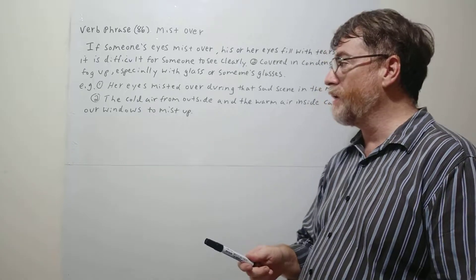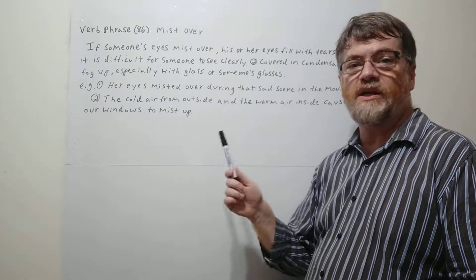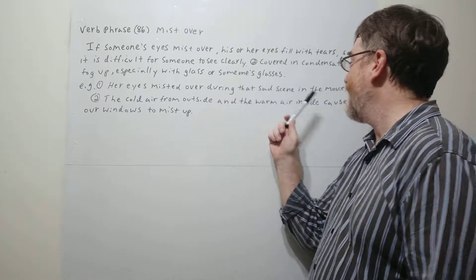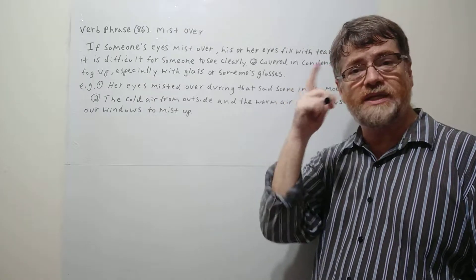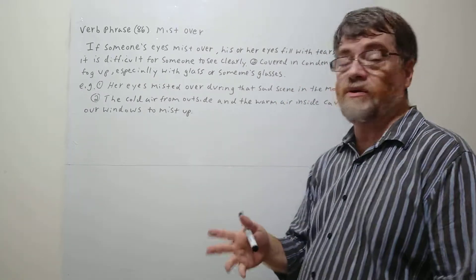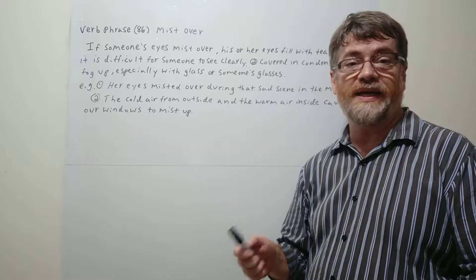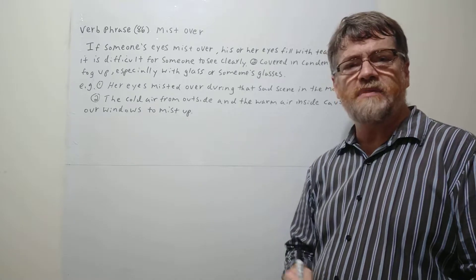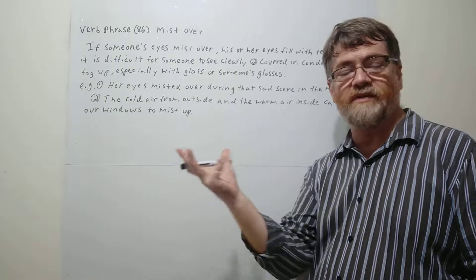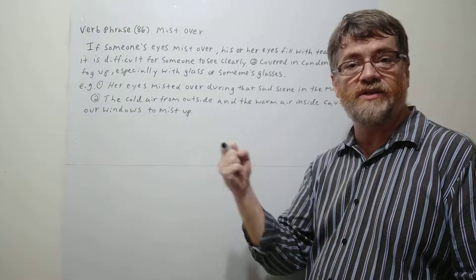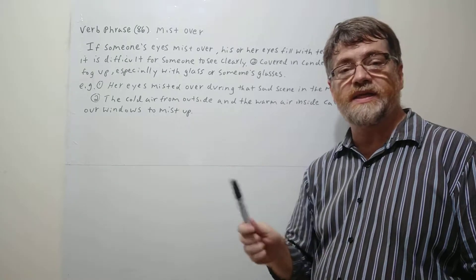So let's look at example number one. Her eyes misted over during that sad scene in the movie. So yeah, it was very sad. Your eyes started to tear up, or we could also say mist over in this sense as well. You know, mist—sometimes we talk about like in the early morning there could be a mist, a very thin cloud in the air. So that's where this idea comes from.